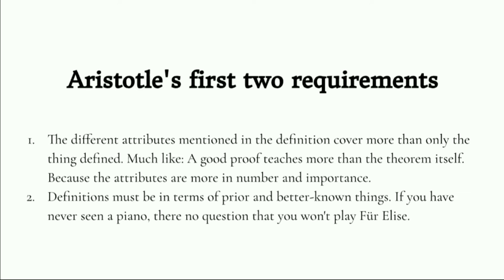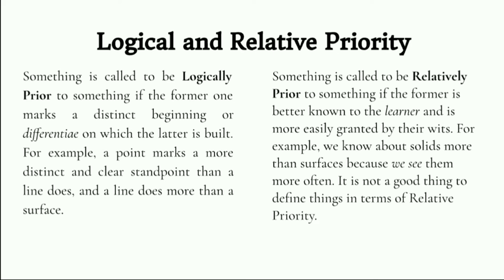Second, a definition must be expressed in terms of things that are prior to and better known than the thing defined. If we do not know about straight lines, there is no question of defining squares, rectangles, or parallelograms. The terms 'prior' and 'better known' are susceptible of two meanings: logically prior and prior relatively to us. In absolute logical terms, a point is better known than a line, a line better known than a surface, and a surface better known than a solid.